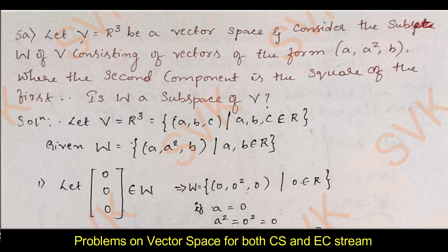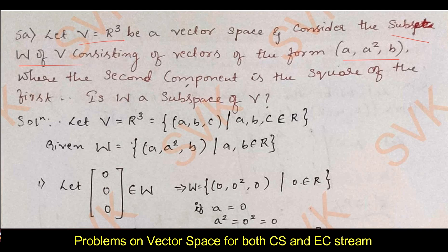Moving on to question number 5a. Let V equal to R³ be a vector space and consider subset W of V consisting of vectors of the form (a, a², b), where the second component is the square of the first. Is W a subspace of V? To prove whether W is a subspace of V, we first need to show it contains the null vector, then show it is a vector space. If these two things are proved, we can say the given set is a subspace of V.